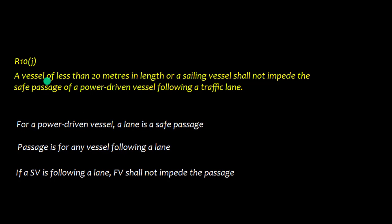Rule 10J states that a vessel of less than 20 metres in length or a sailing vessel shall not impede the safe passage of a power-driven vessel following a traffic lane. This applies to any vessel following a lane — for example, if a sailing vessel is following a lane, a fishing vessel shall not impede its passage.